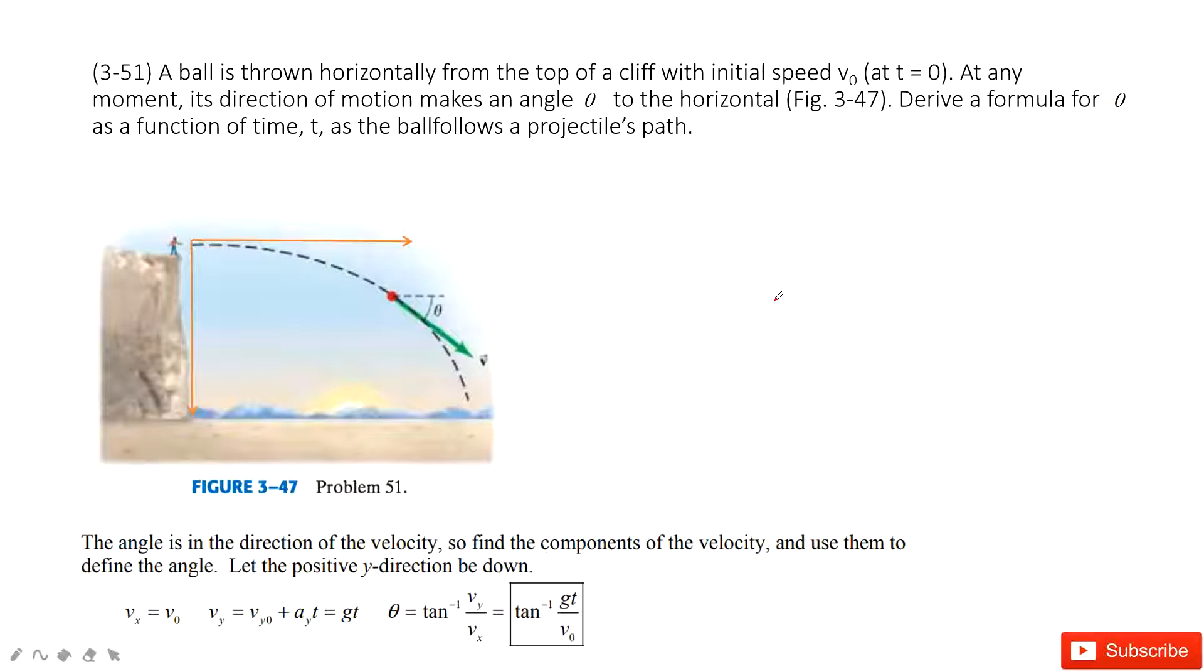Let's talk about problem 51 in chapter 3. This is still projectile motion. They tell us the initial velocity is v0, and then it's just horizontal, so the initial angle is 0.